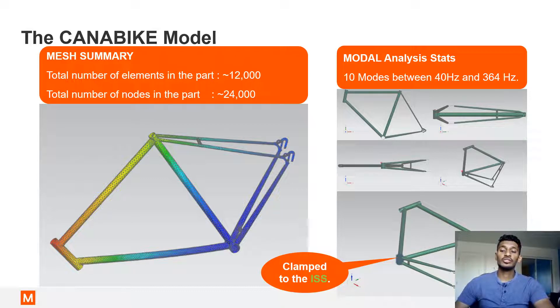A model of a bike frame was used to demonstrate the experiment. This model was clamped at the bottom bracket as displayed here. Normal modes analysis using the Lanczos scheme was performed to determine the top ten modes of the system and it was found that the frequency range of the normal modes ranged between 40 and 364 Hz.